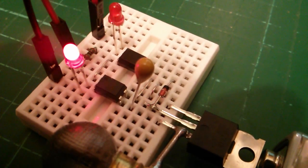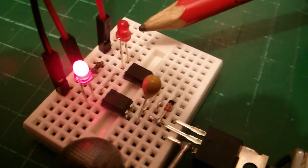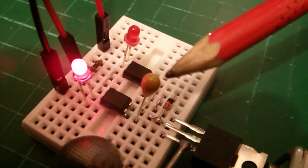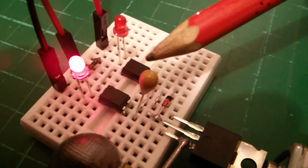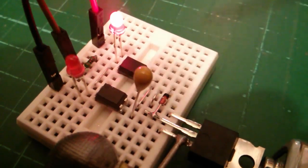They work in a complementary fashion. You can see the two LEDs here flashing alternately on and off. So one opto-isolator is on when the other one is off.